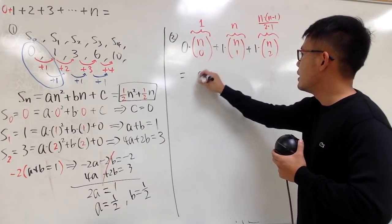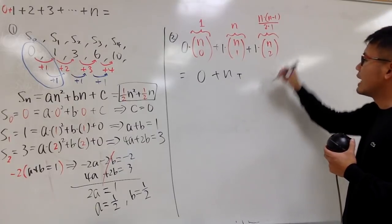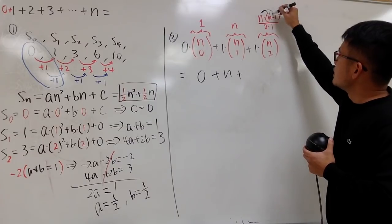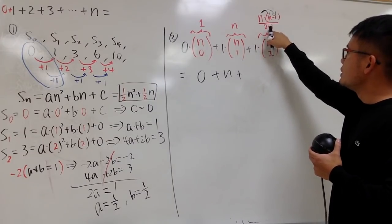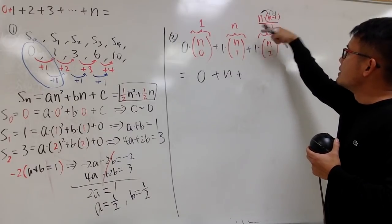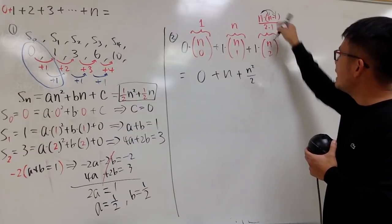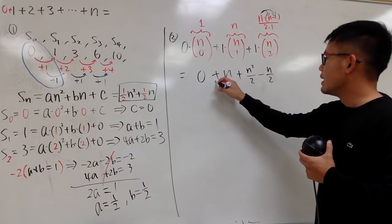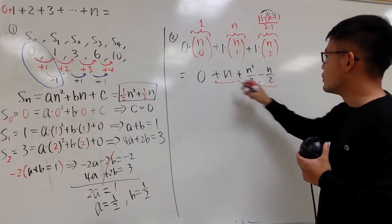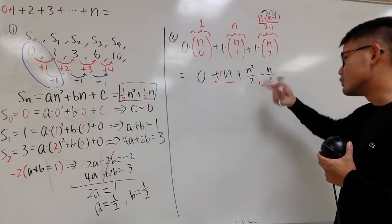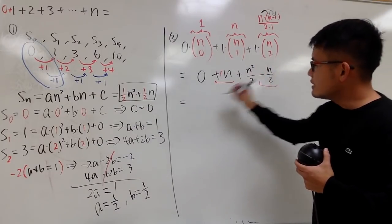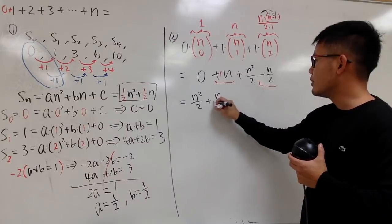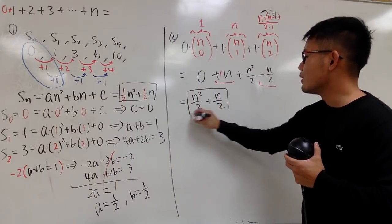So 1 times n is just n. Then 1 times n(n−1)/2. Distributing: n squared over 2 minus n over 2. Combining with the n term: positive n minus n over 2 is one half n. In the end, we get n squared over 2 plus n over 2, which is the same formula as before.